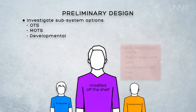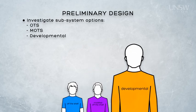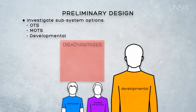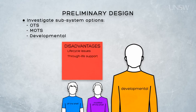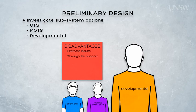If there are no off the shelf items available to us, we may need to consider designing and developing the subsystem from the ground up. Naturally, this will be an involved process, but remember also that we'll need to think about lifecycle issues and ensure that we establish through-life support for anything that we design from scratch. Systems engineers need to work closely with our integrated logistic support colleagues during this period to ensure that our design is manufacturable, supportable, and disposable.